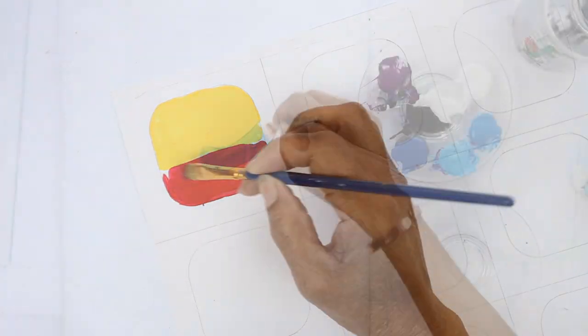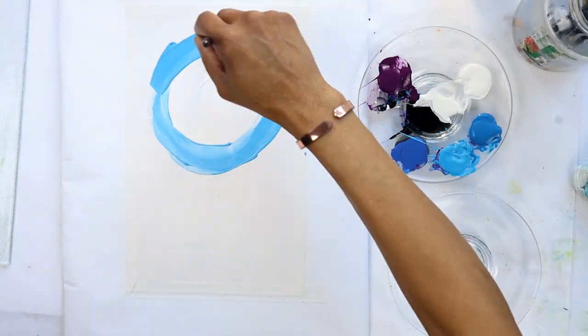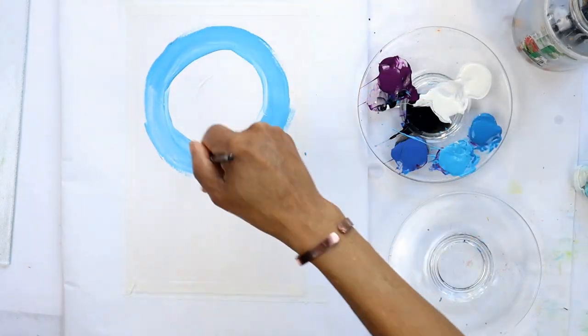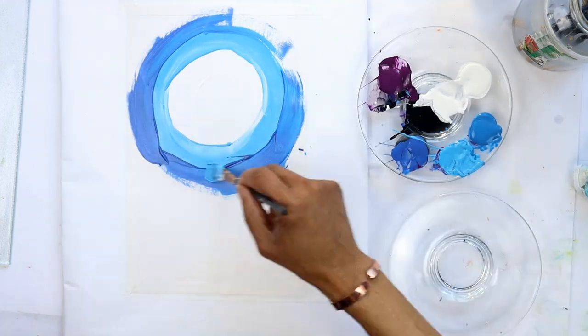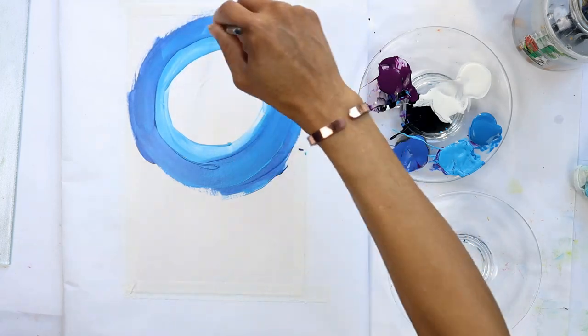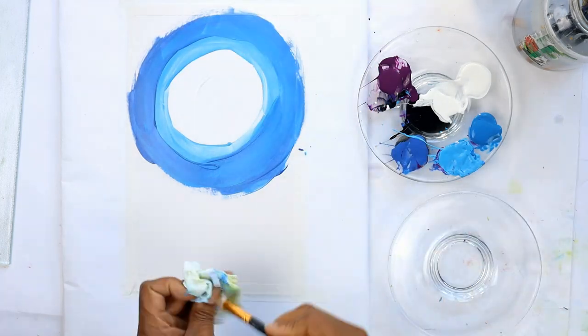So here I have an example of when I used this technique but in a circular pattern. If we want to create something like light illuminating the sky, a great technique is to put a little bit of the lighter color on your paintbrush in order to blend the two.